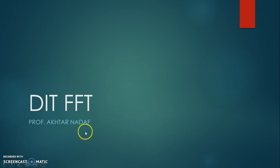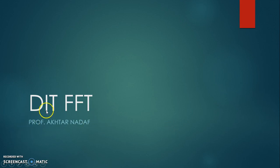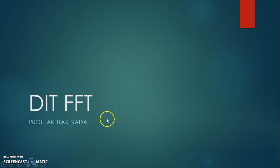Hello everyone. In this video we are going to see the DIT-FFT algorithm. DIT-FFT stands for Decimation in Time Fast Fourier Transform. Generally the Fast Fourier Transform is useful for the calculation of Fourier transform in the easiest way. Fourier transform is basically used for the conversion of a time domain signal into a frequency domain signal.